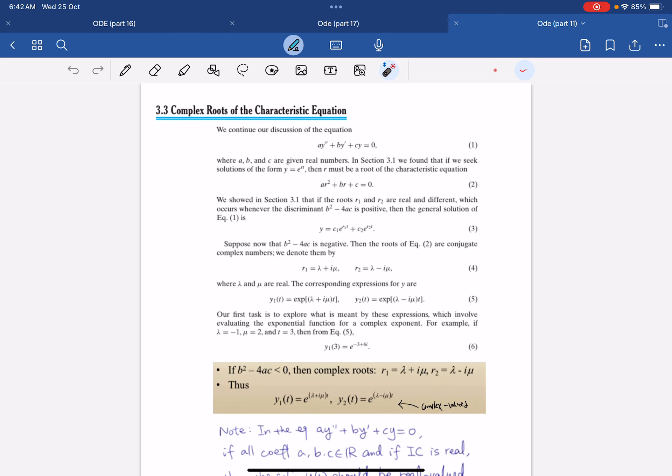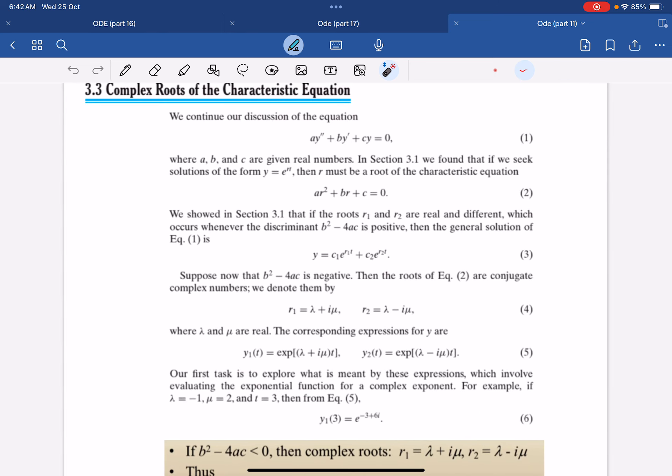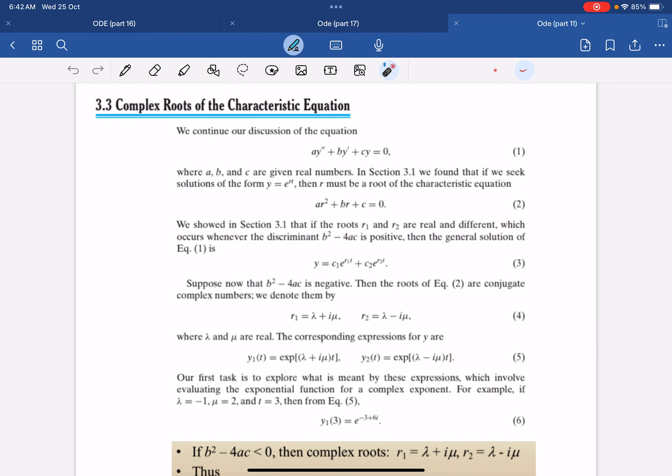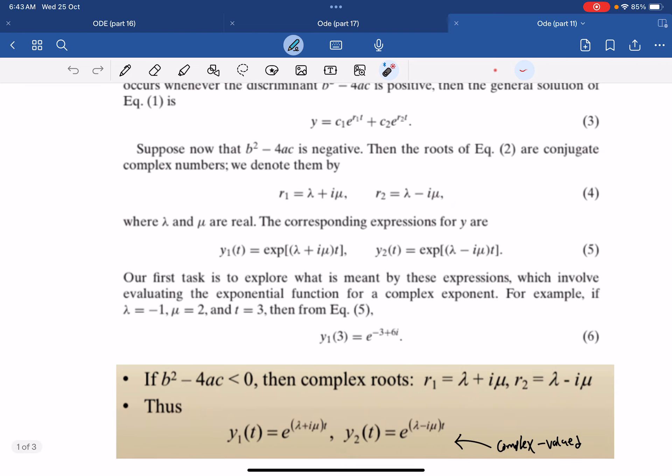But what happens now when the roots are complex? Well, it is actually not too difficult as the steps and procedure to solving it is the same. So when you solve for it being complex, you will arrive at r1 equals lambda plus i mu and lambda minus i mu.